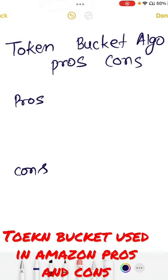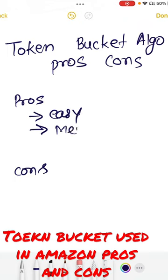What are the pros and cons of the token bucket algorithm? This is also used in Amazon and Stripe. One thing is it's very easy to implement. Next, it is very memory efficient because it requires only maintaining buckets.